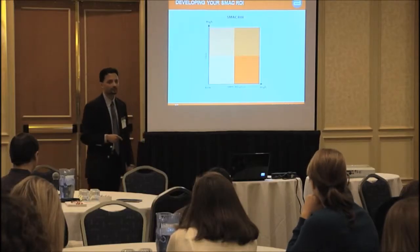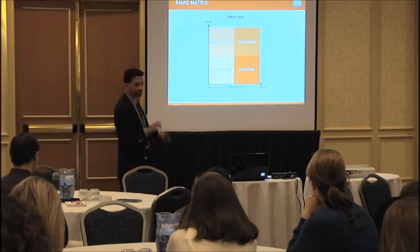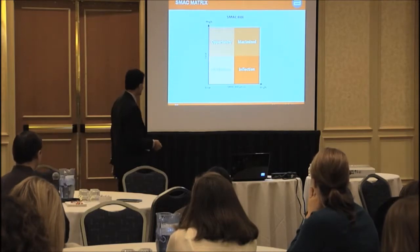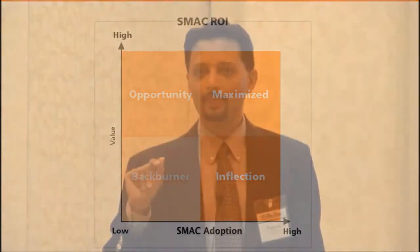It helps you figure out where each program fits. If you have low SMACK adoption and low value, you sit in the back burner quadrant. High adoption and high value puts you in the opportunity quadrant. The other two quadrants are maximized and inflection.